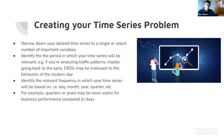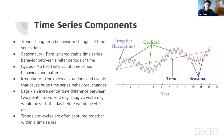A time series can be thought of as made up of four different components: the trend, the seasonality, the cycles, and the irregularities — essentially noise. A trend is how your time series is moving with respect to time very gradually. You can see in this graphic the trend of the time series moving slightly upward as the years progress.